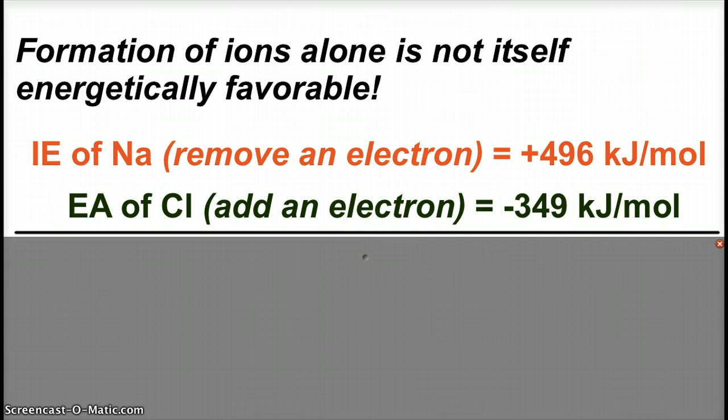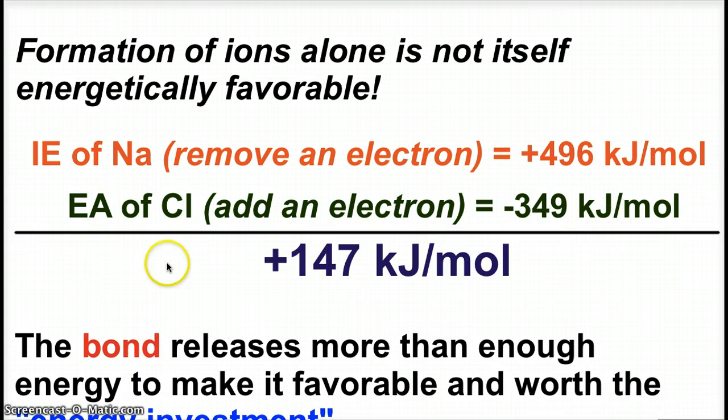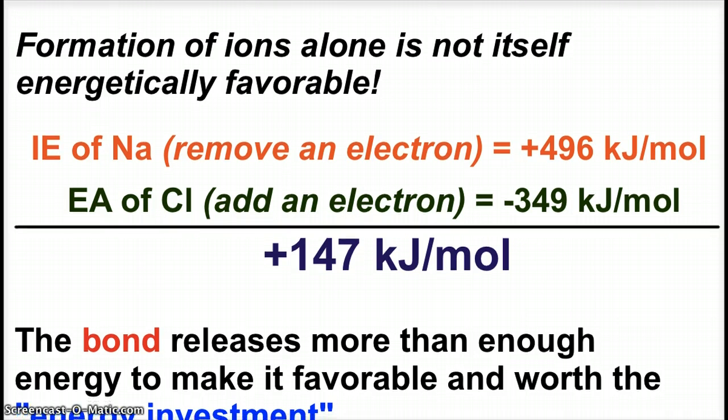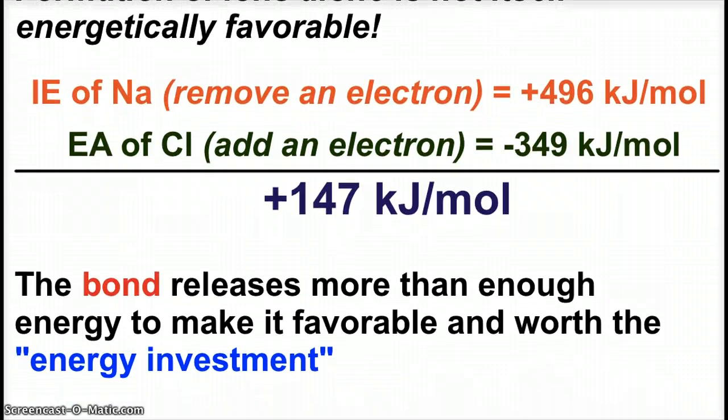it actually releases energy. Because, and that's what the electron affinity is if we add an electron. Because we know that a chloride ion is much more stable than a chlorine atom. So, the adding of that electron isn't that big of a deal. So, what we end up seeing is when these two processes are added together, it's 147 kilojoules per mole positive. But what ends up happening is that the bond releases more than enough energy to make this situation favorable. And worth the, quote-unquote, energy investment that is needed in order to form the ions.